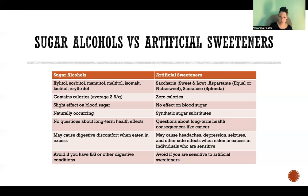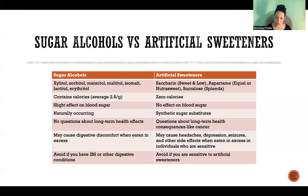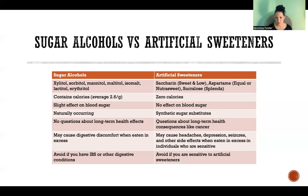People who have IBS — irritable bowel syndrome — or other digestive conditions might want to avoid sugar alcohols because you might be more prone to those digestive effects. And anybody who is sensitive to artificial sweeteners should avoid them because you're going to be more prone to headaches and other side effects.